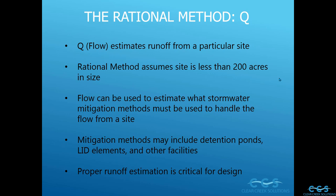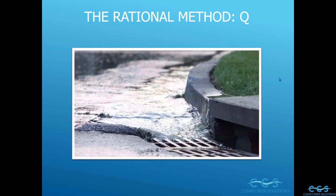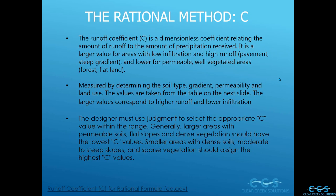Getting a proper runoff estimation is critical for whatever design you're doing in hydrology. It helps determine stormwater mitigation methods — where to put catch basins, how many, what other mitigation methods are needed. Now let's talk about C, the runoff coefficient. It is a dimensionless value in this equation — a dimensionless coefficient relating the amount of runoff to the amount of precipitation received. It is a larger value for areas with low infiltration and high runoff, such as pavement, and lower for permeable, well-vegetated areas.